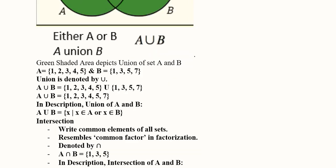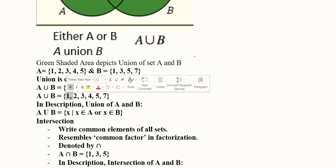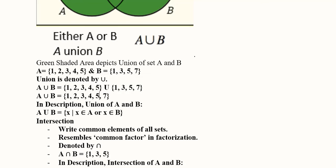Green shaded area shows the union of A and B, all those elements are written once. You can see these are the two sets. What we can see is that 3 and 5, they are being repeated as well as 1. So, these three elements are being repeated but in the union we will write them once only that is 1, 3 and 5.